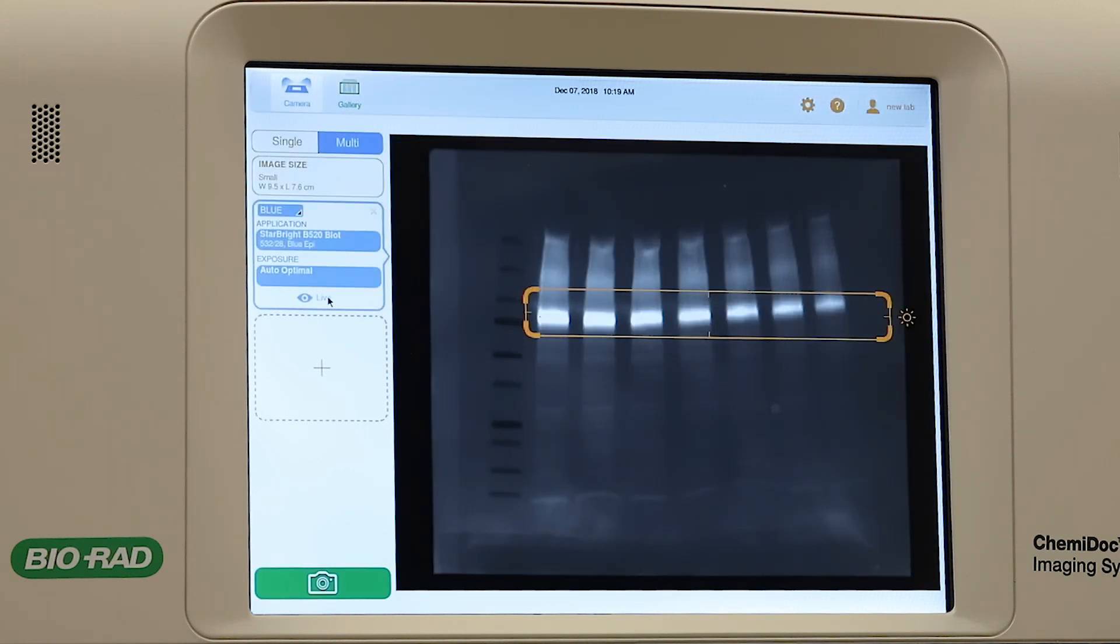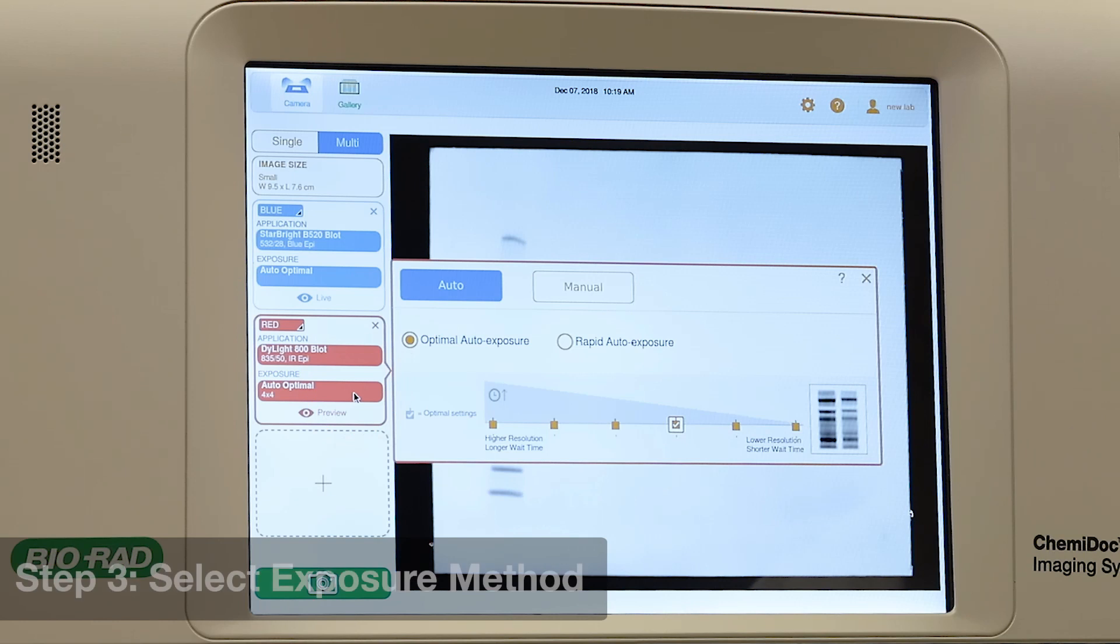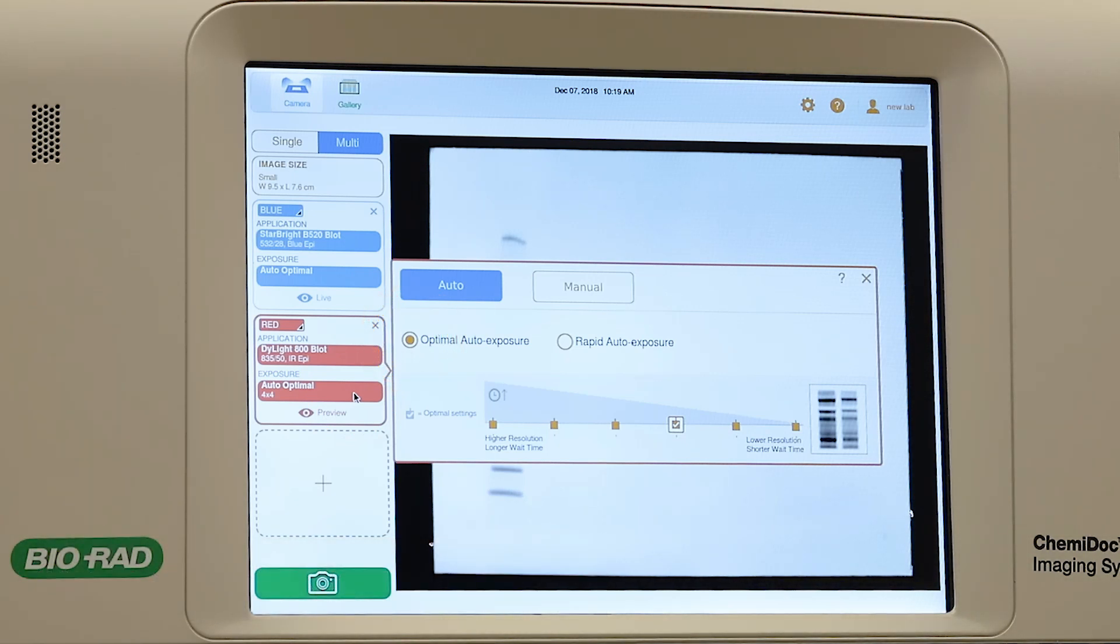You can choose between entering your exposure time or enabling automatic detection of your bands. Tap Exposure. Select Optimal Exposure to use the full dynamic range of the instrument to show faint bands without saturating bright bands.